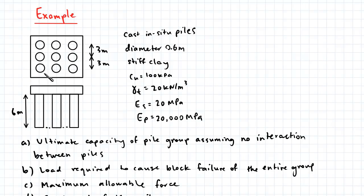So here we have a group of nine piles with a spacing of three meters between each pile from center to center. These piles are cast in situ and the diameter of each pile is 0.6 meters.